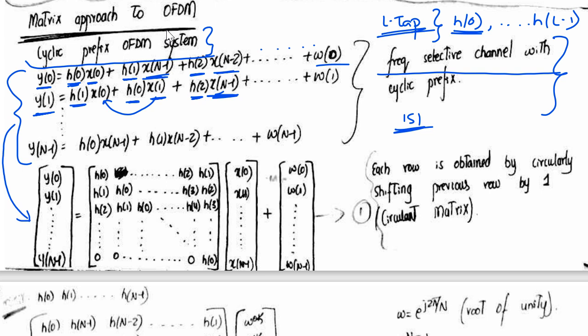You can take a pause and try to write it in matrix form yourself — you will get this matrix. If you look at each row — H(0), H(1), H(2) — you will observe that each row is circularly shifted by one compared to the previous row. So this matrix H is a circulant matrix.